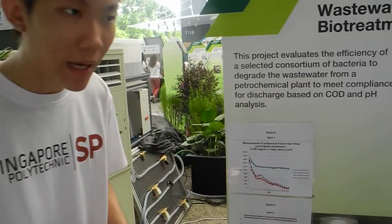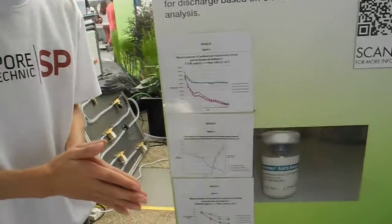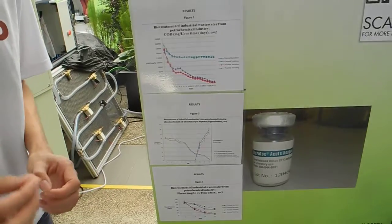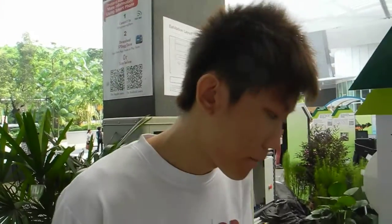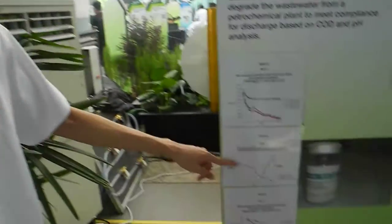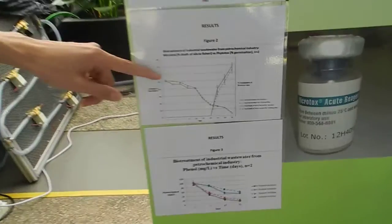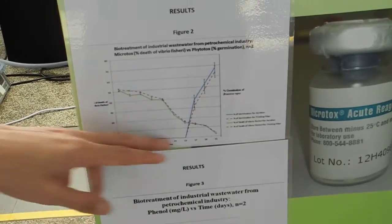Other tests we've done include Microtox and Phytotox. In the Microtox test, we expose a marine bioluminescent organism to wastewater, and we can measure and estimate the amount of toxicity in it, because it emits light and we can test the light intensity of this organism. We can see from the graph that the toxicity in the Microtox test is decreasing constantly throughout the 21 days.